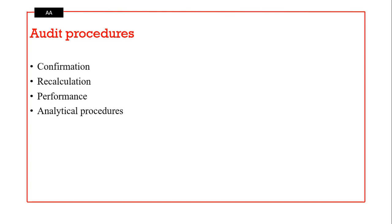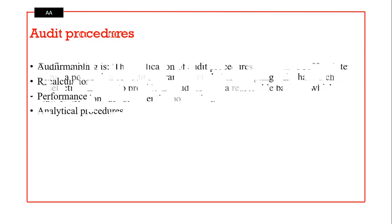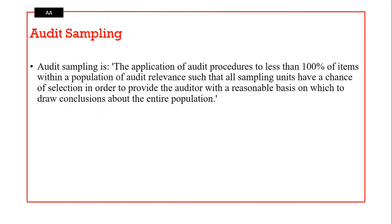You can undertake analytical procedures — the comparison of like-for-like items. Check whether there is a plausible relationship between what you're comparing, and any drastic or significant deviation is cause for further investigation.